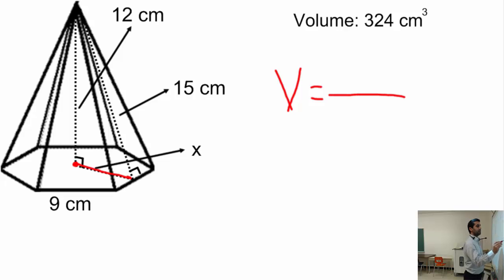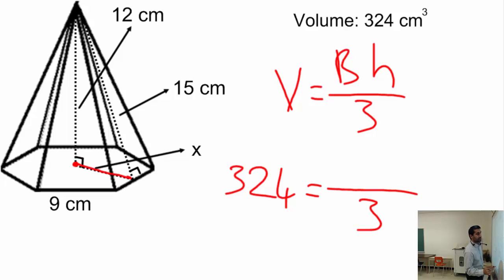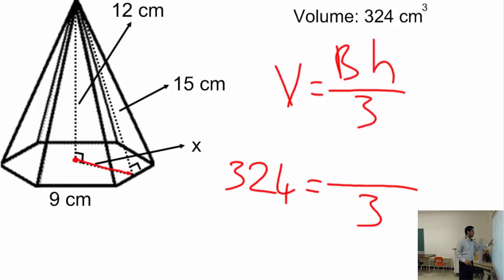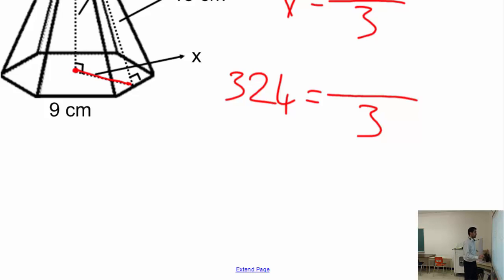Let's write down the volume: 324 equals division by 3, capital B times h. We don't know the B, so let's go ahead and calculate the base area on the side here. For a polygon, the area formula is n times l times a divided by 2.